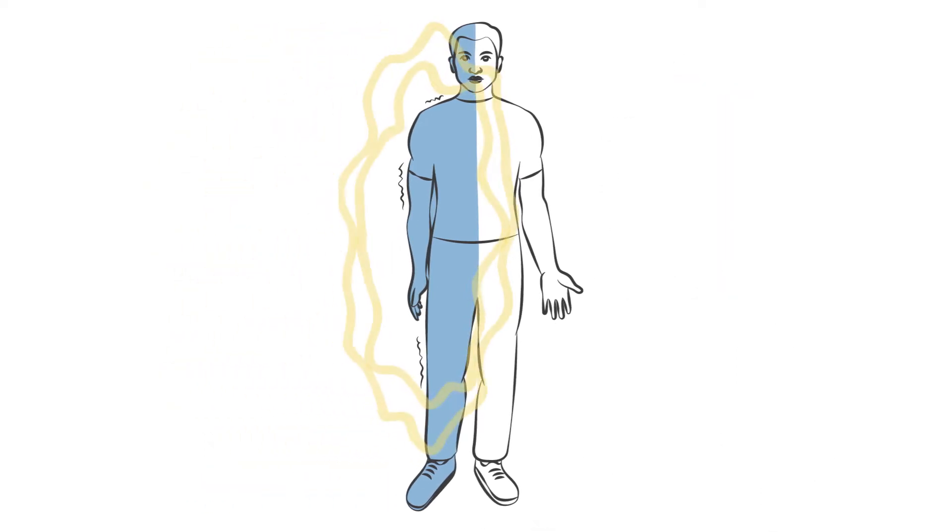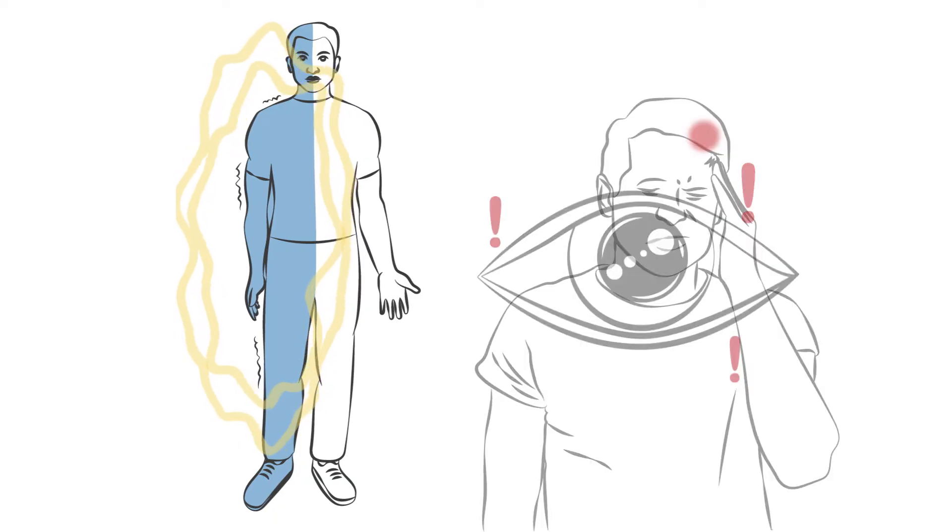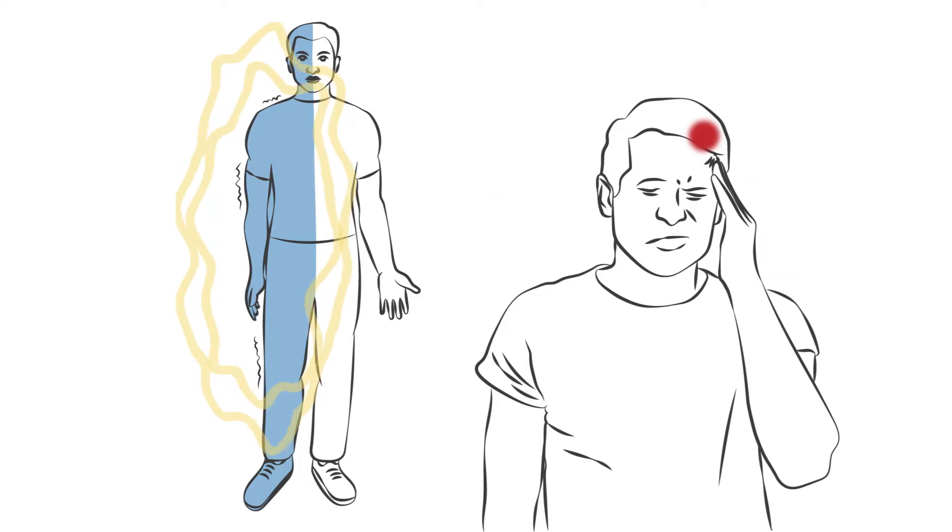The weakness is a form of aura and is accompanied by at least one other aura symptom, such as visual changes. The weakness is not always on the same side as the head pain and can vary from mild to severe.